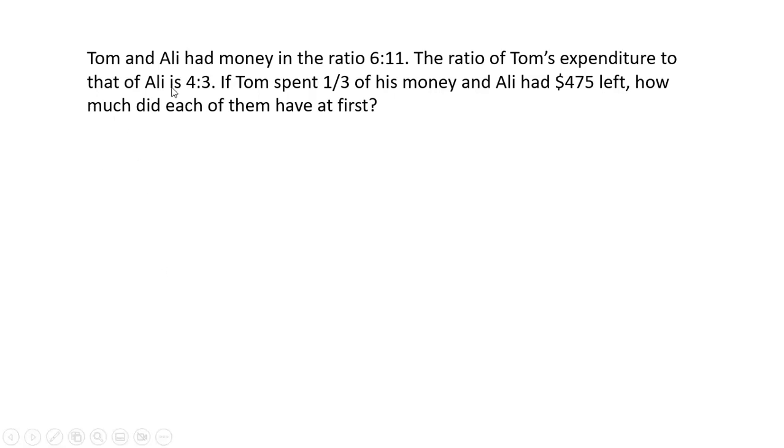Tom and Ali had money in the ratio 6 is to 11. The ratio of Tom's expenditure to that of Ali is 4 is to 3. If Tom spent one third of his money and Ali had $475 left, how much money did each of them have at first?